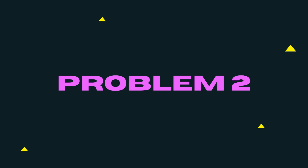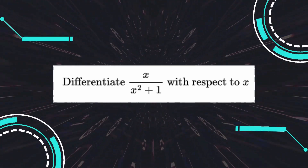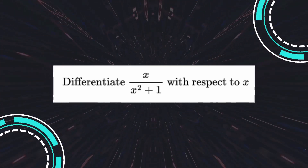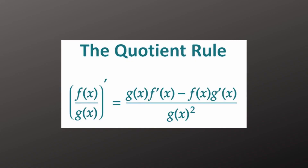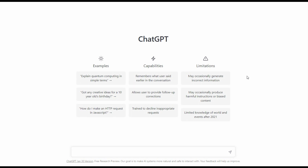The second differentiation question is to find the derivative of x over x squared plus 1. For this problem, we use the quotient rule: square the denominator, copy the denominator up into the numerator and differentiate the numerator, subtract keeping the numerator times the derivative of the denominator. Let us see if ChatGPT can solve this.